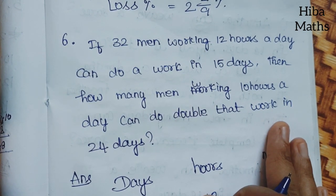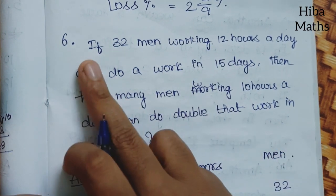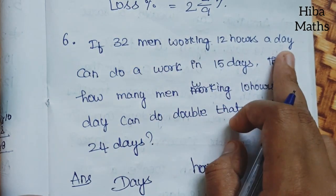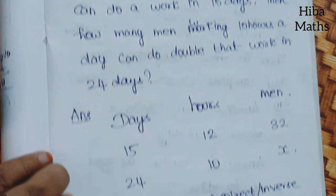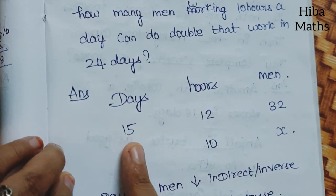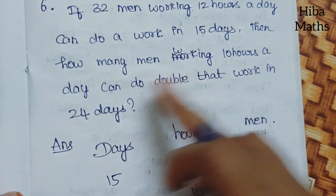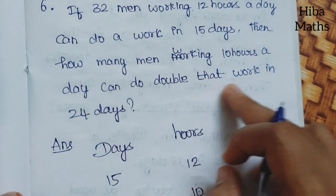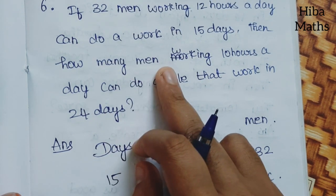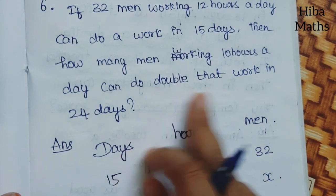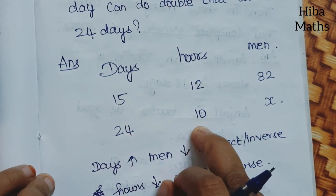Hello students, welcome to Hibamax 8th standard math lab, question 4.5, 6th question. If 32 men working 12 hours a day can do a work in 15 days, then how many men working 10 hours a day can do double that work in 24 days?